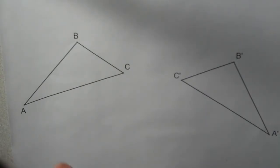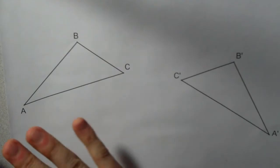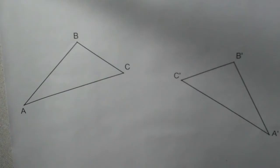So what I have here is triangle ABC has been reflected over some line to form triangle A prime, B prime, C prime. And what I want to do is actually construct the line of reflection that caused this transformation.